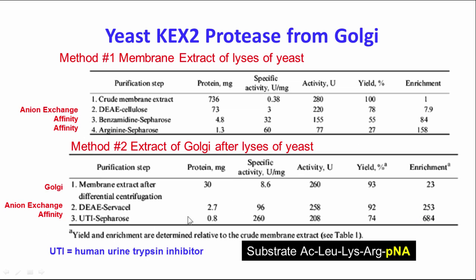Sometimes you have to try various methods to get there. The substrate used has a para-nitroanilide group, so when the peptide bond between arginine and the para-nitroanilide is cleaved, you get a yellow product that you can measure in a spectrophotometer, microplate reader, or titer plate.